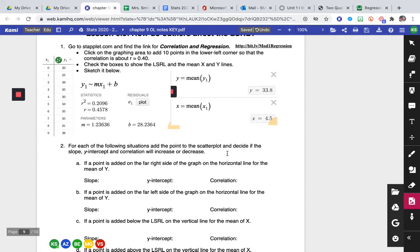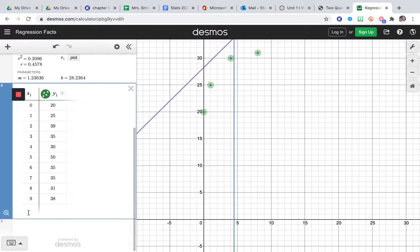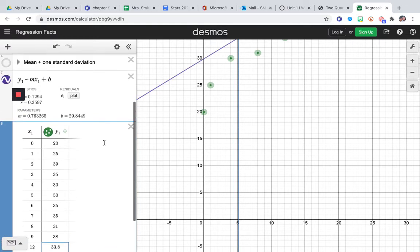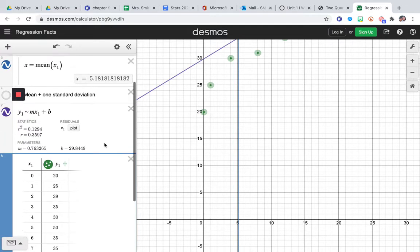Now for each of the following situations, we're going to add a point to the scatter plot and decide if the slope, y-intercept, and correlation will increase. So if a point is added on the far right side of the graph on the horizontal line for the mean of y, our y-value's mean is 33.8. And if I want to add a point to the far right side of the graph, then I'm going to choose an x-value that's higher than 9 and my y-value will be 33.8. So I'm going to come here, I'm going to go to the table and just add another row. And I'll just do 12, 33.8 because that was the mean of the y-value.